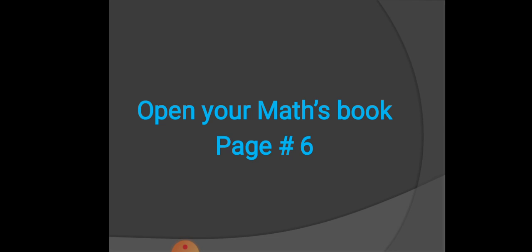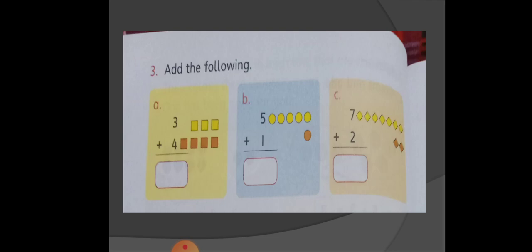Dear students, now open your maths book page number 6. Now we will add the following, count the boxes. 1, 2, 3 yellow boxes, then 1, 2, 3, 4 red boxes and total boxes are 7.